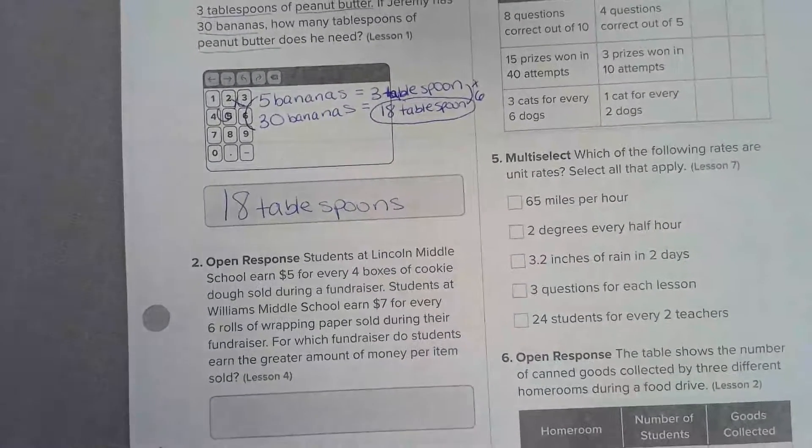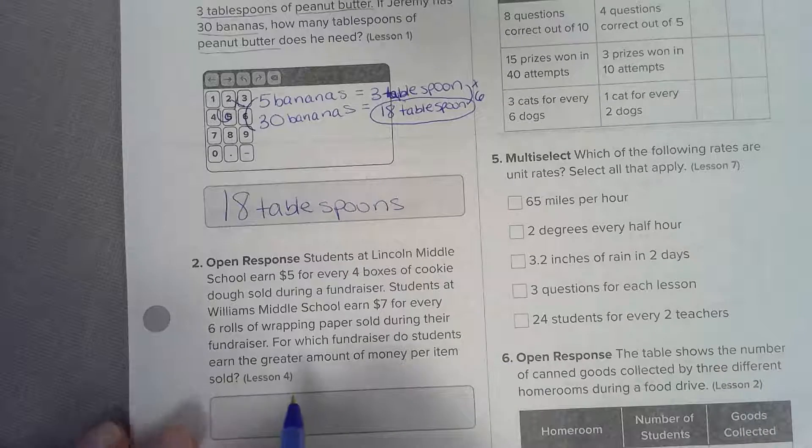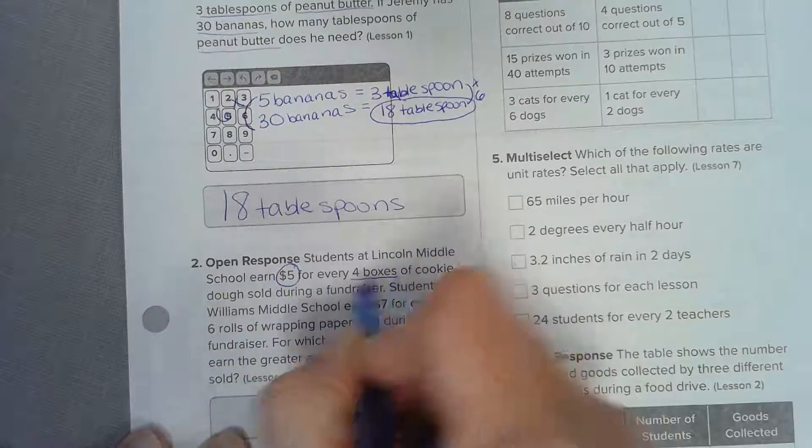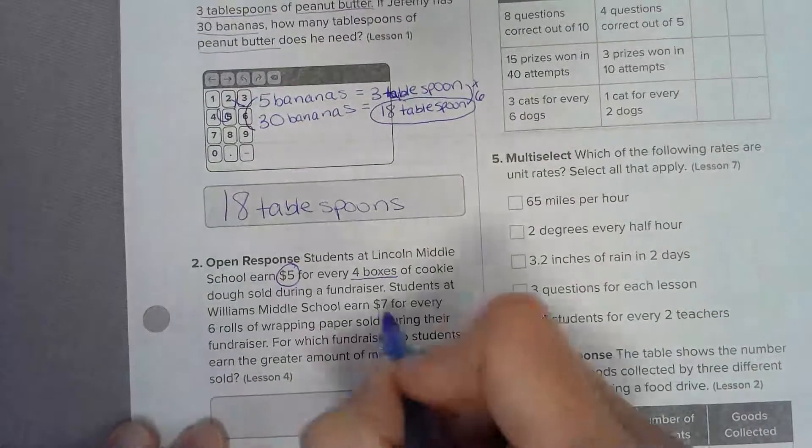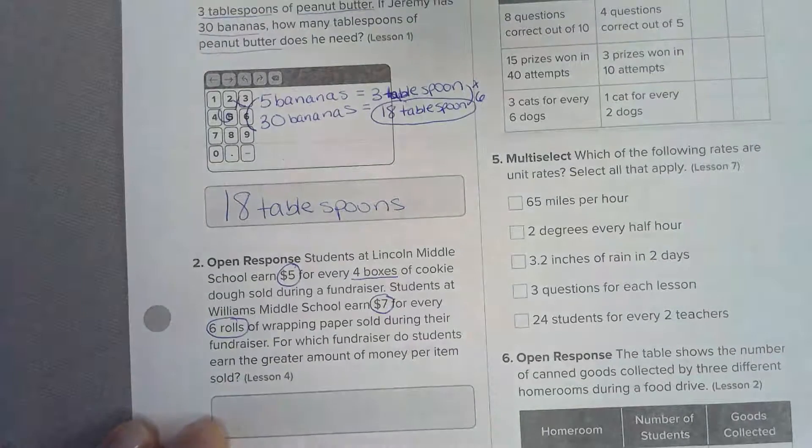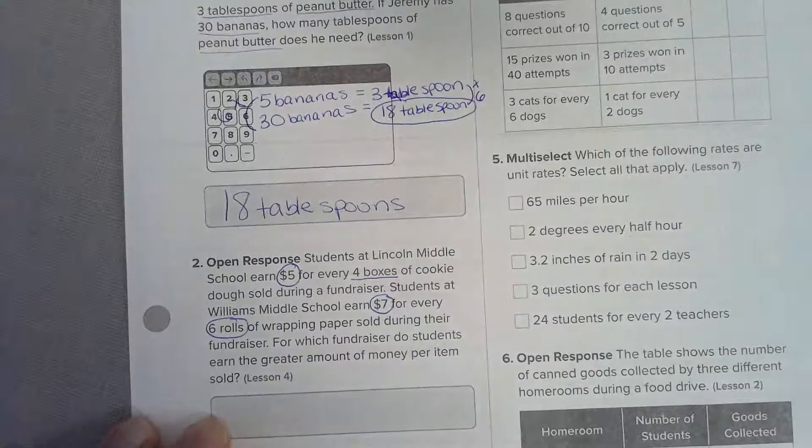Number two: students at Lincoln Middle School earn five dollars for every four boxes of cookie dough. Students at William Middle School earn seven dollars for every six rolls of wrapping paper sold. Which fundraiser do students earn a greater amount for?